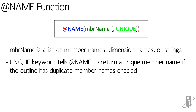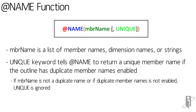The UNIQUE keyword tells the NAME function to return a unique member name if the outline has duplicate member names enabled. If the member name is not a duplicate, or if duplicate member names is not enabled in the outline, the UNIQUE keyword is ignored and only the member name is returned.